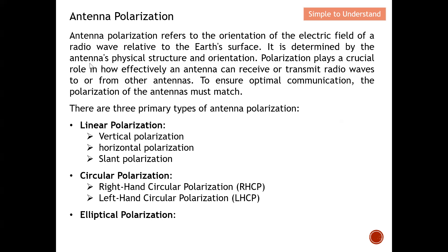The orientation of the electric field with respect to the Earth's surface will determine the polarization. It is determined by the antenna's physical structure and orientation. Polarization plays a crucial role in how effectively an antenna can receive or transmit radio waves. To ensure optimum communication, the polarization of the antennas must match — if you have vertical, you must go to vertical polarization; horizontal must go to horizontal polarization.